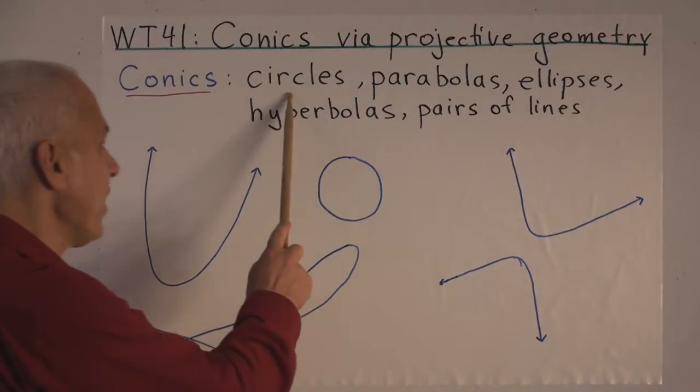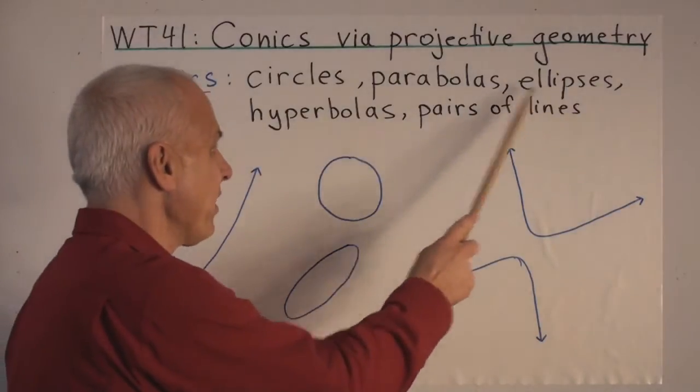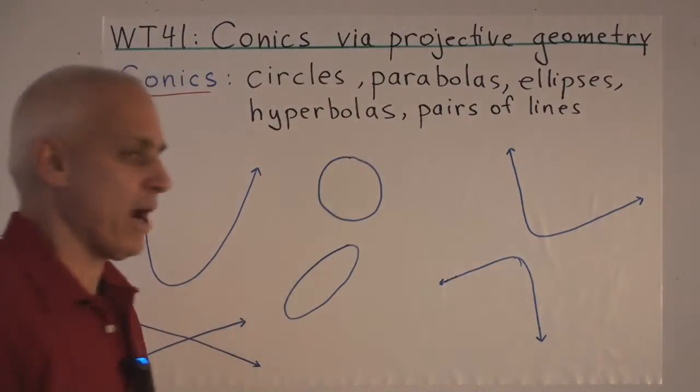So, a conic for us is something like a circle, parabola, ellipse, hyperbola, or even a pair of lines.